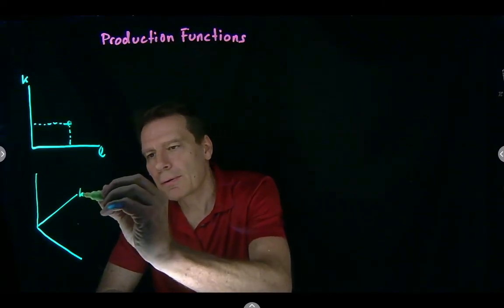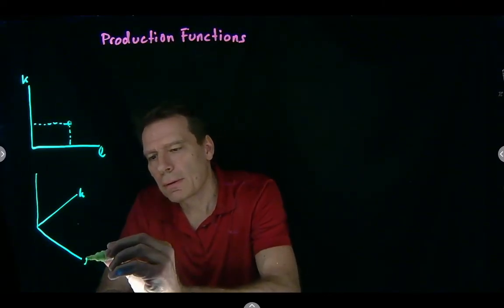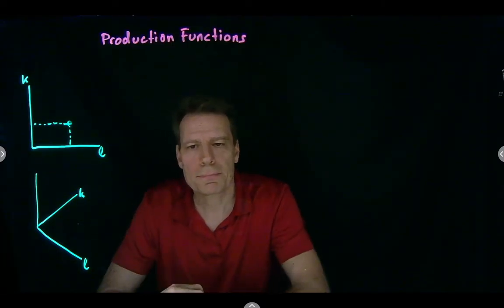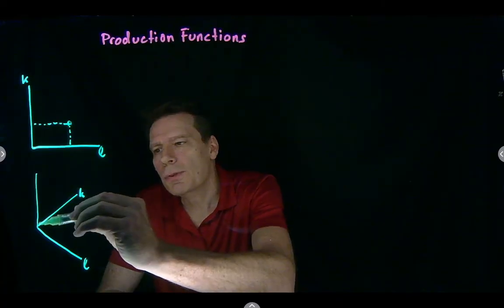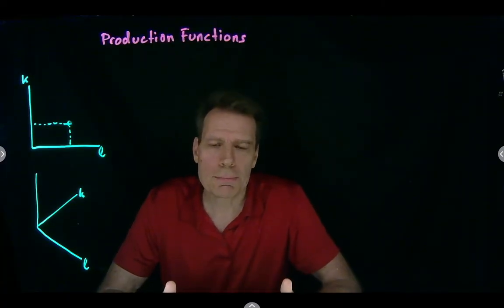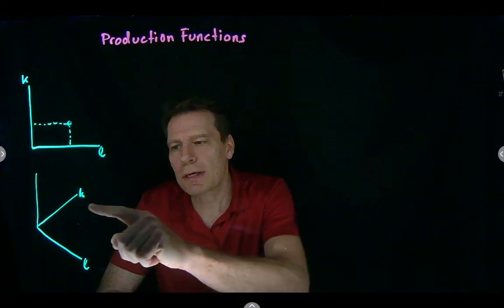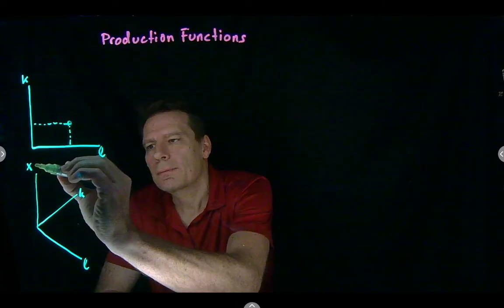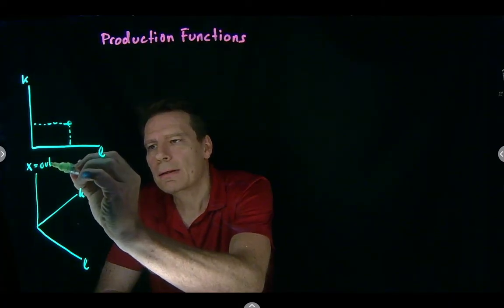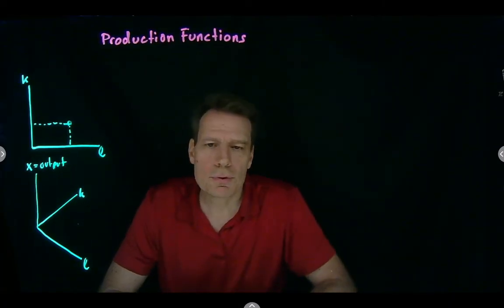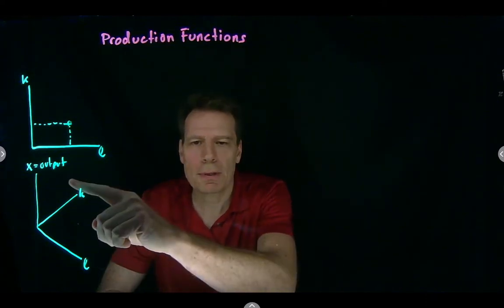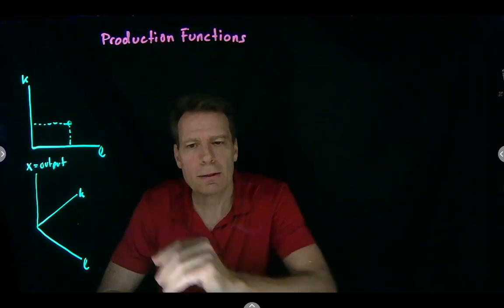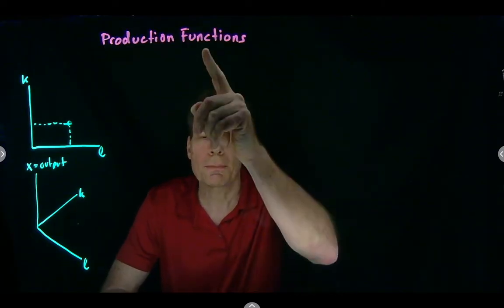When we bring capital and labor into our lower picture, we have a plane that contains all the possible input bundles. The third axis measures how much output we can produce with each combination of inputs — we'll put output on the vertical axis and denote it by x. As we trace out how much output we can produce for different input bundles, we're tracing out what we call a production function.